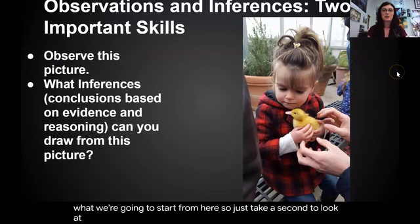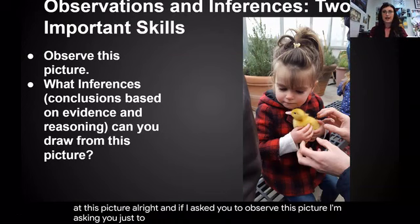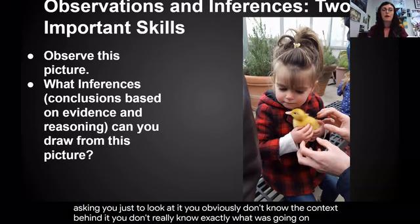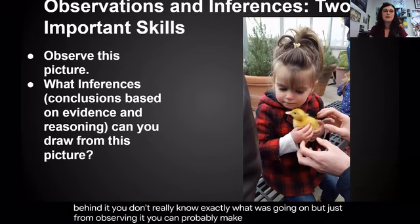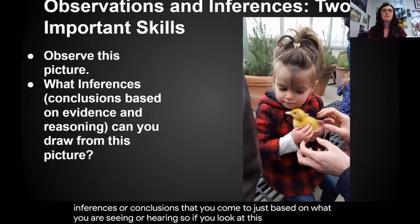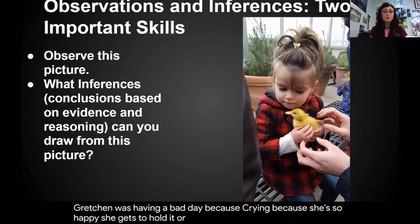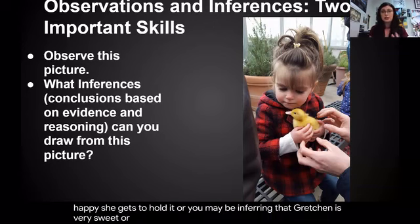Take a second to look at this picture. If I asked you to observe this picture, I'm asking you just to look at it. You obviously don't know the context behind it. But just from observing it, you can probably make some inferences. Inferences are conclusions you come to based on what you are seeing or hearing. You might infer that Gretchen was having a bad day because she has tears in her eyes, or maybe she really loves animals because she's crying because she's so happy she gets to hold it.